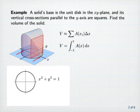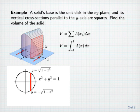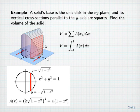Let's look at the unit circle in the plane. Each cross-section is a square whose bottom edge extends from the bottom half to the top half of the circle. At the top, y is equal to the square root of one minus x squared, and at the bottom, y is minus the square root of one minus x squared. So the edge length of the square cross-section is two times the square root of one minus x squared, which means the cross-sectional area is four times one minus x squared. This will be the integrand in the volume integral.